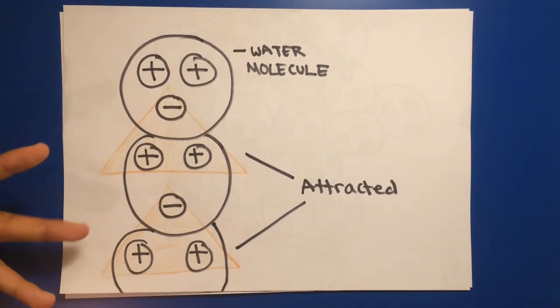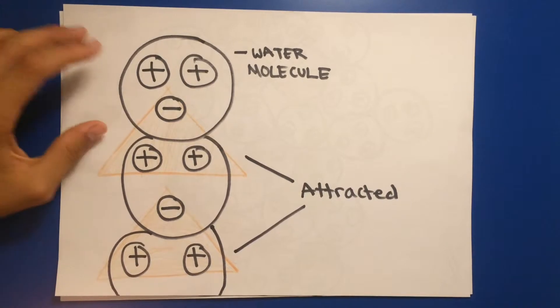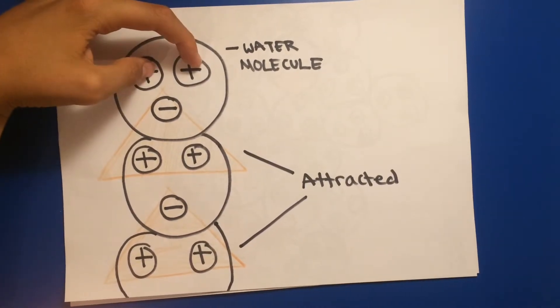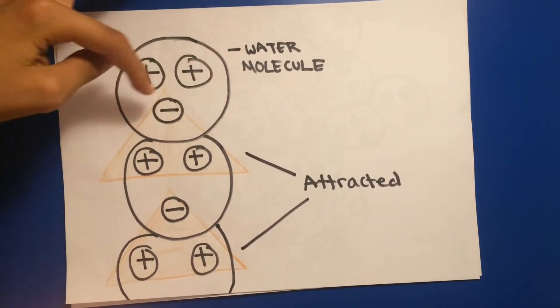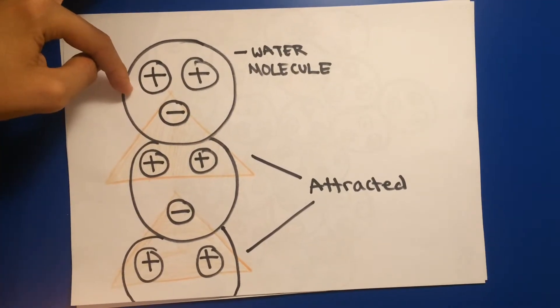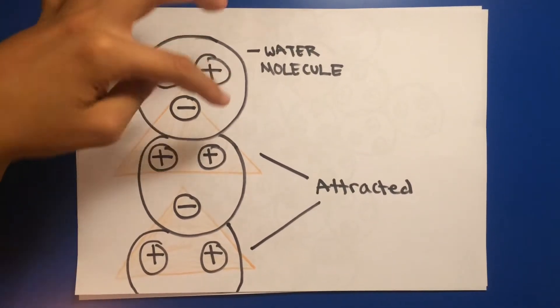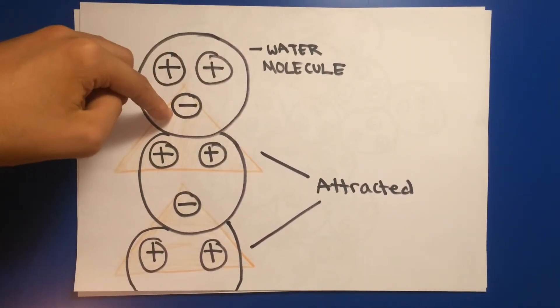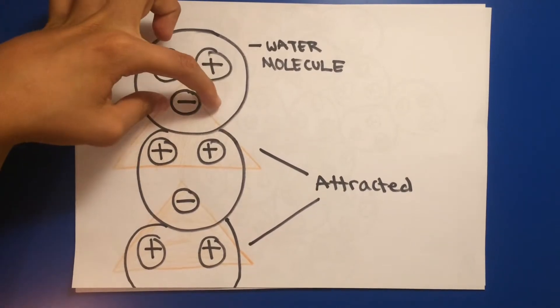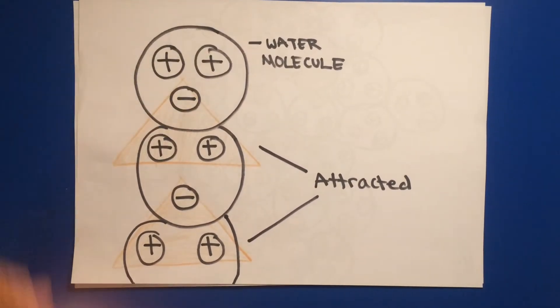Here we see three water molecules. In a water molecule, the two hydrogen atoms, where they are, that side is dominantly positively charged, and the other side, where the negatively charged oxygen atom is, is dominantly negatively charged.